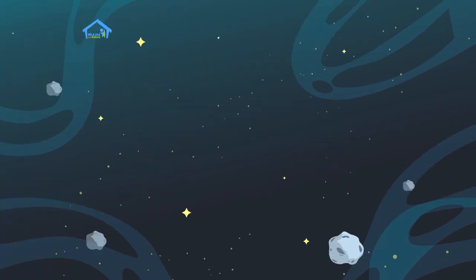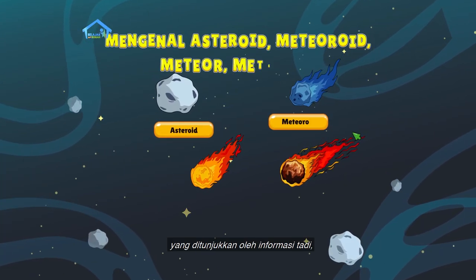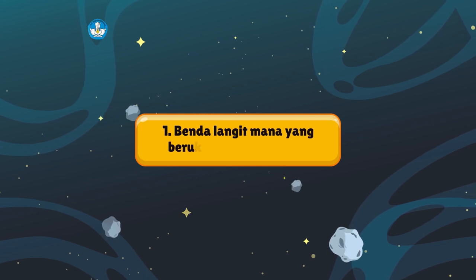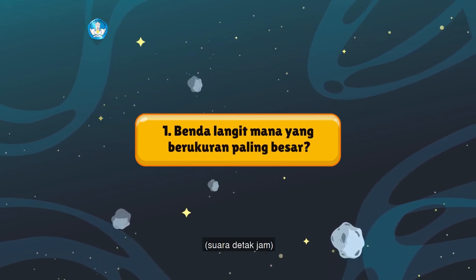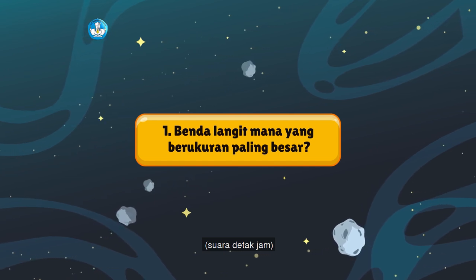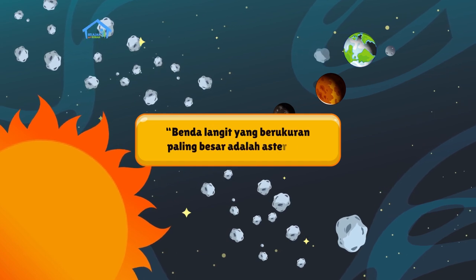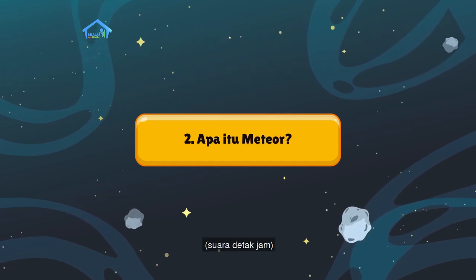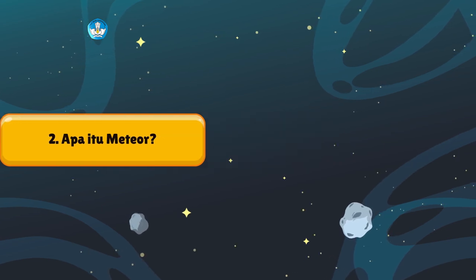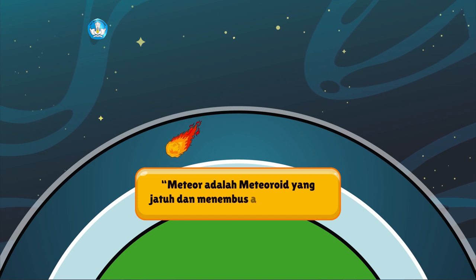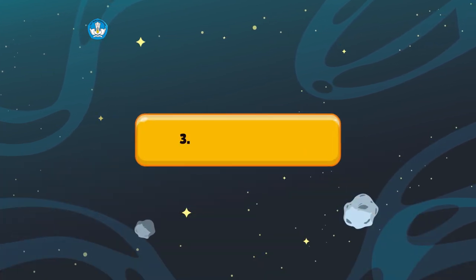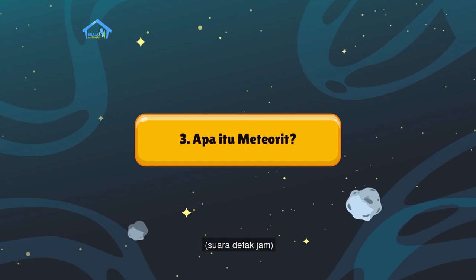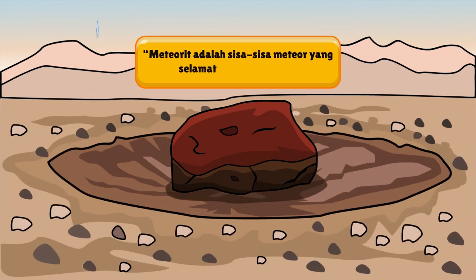Menanggapi bacaan: Ingat kembali benda-benda langit yang ditunjukkan oleh informasi tadi dan jawab pertanyaan berikut. Pertama, benda langit mana yang berukuran paling besar? Benda langit yang berukuran paling besar adalah asteroid. Kedua, apa itu meteor? Meteor adalah meteoroid yang jatuh dan menembus atmosfer bumi. Ketiga, apa itu meteorit? Meteorit adalah sisa-sisa meteor yang selamat sampai di bumi.